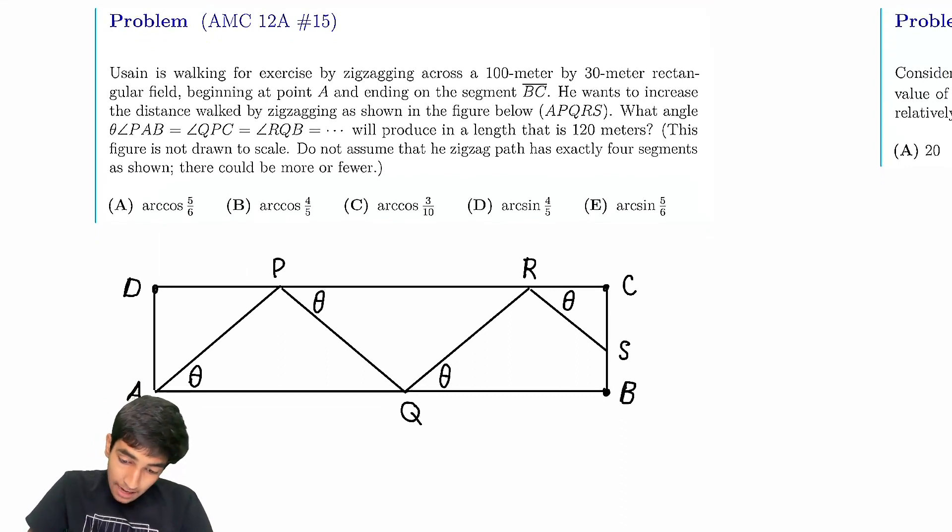Usain is walking for exercise and zigzagging across this 100 by 30 rectangular field, beginning at A. So you kind of just go like this. And whenever you hit a segment, you just kind of go back in the other direction, but now this angle is theta. Just keep going like this all the way until you reach the end.